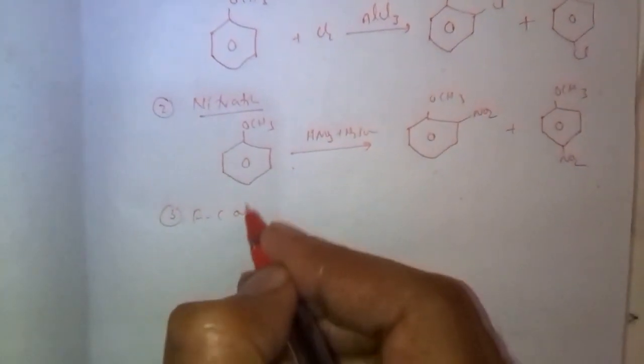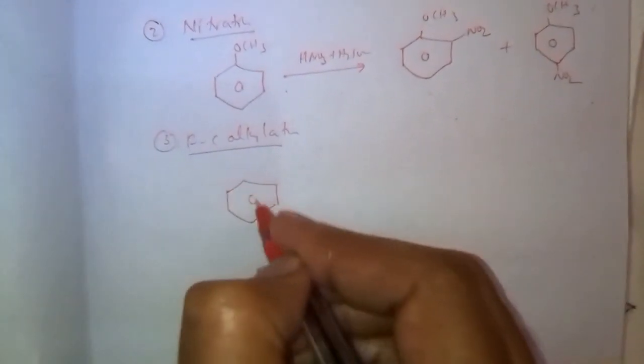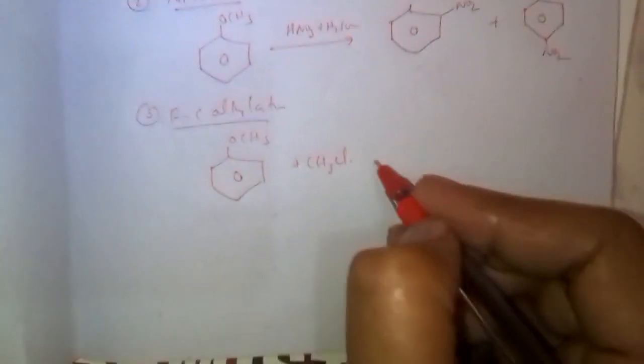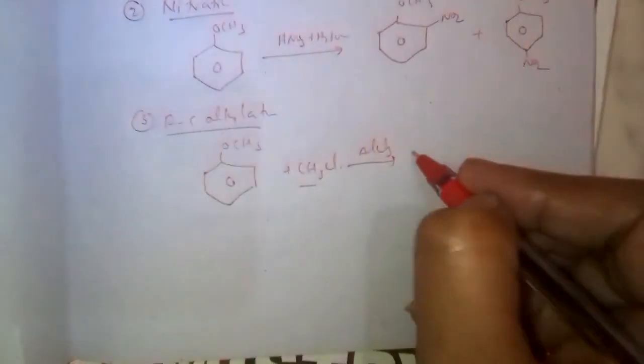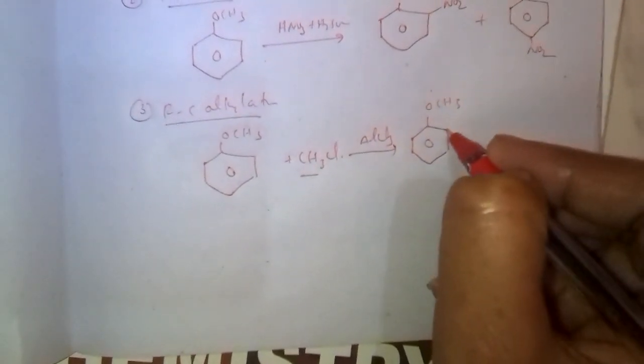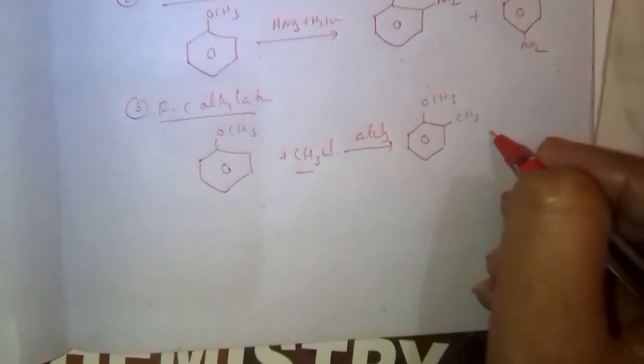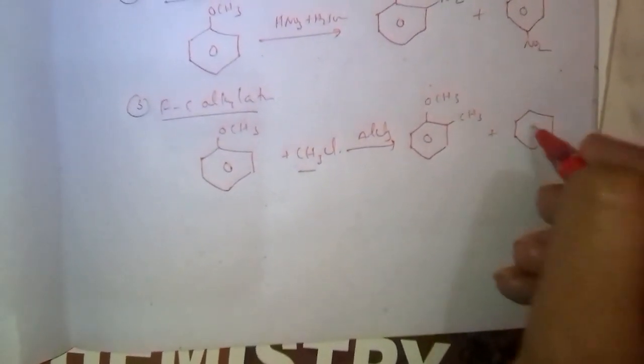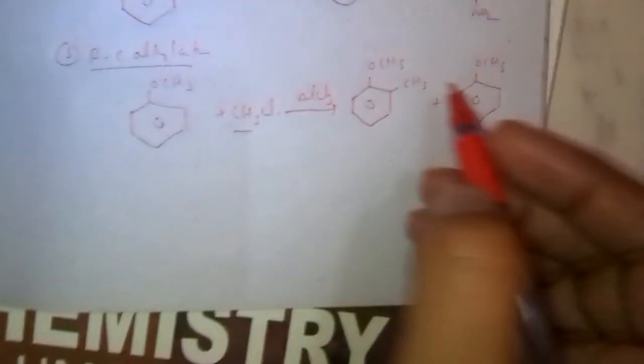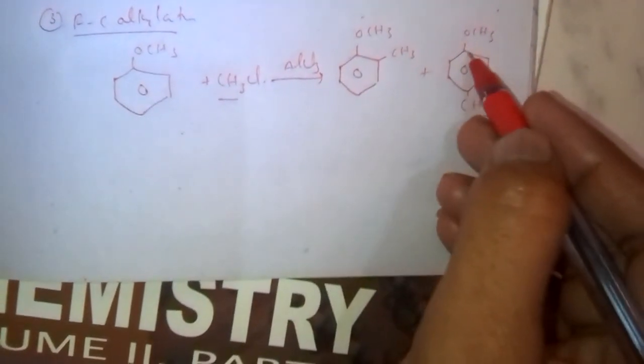Next, Friedel-Crafts alkylation. Reacts with CH3Cl. Here electrophile generated is CH3 plus. It attaches at ortho or para position. Ortho-methylanisole, para-methylanisole. This one is formed. Or this one is also known as 2-methoxytoluene, 4-methoxytoluene.